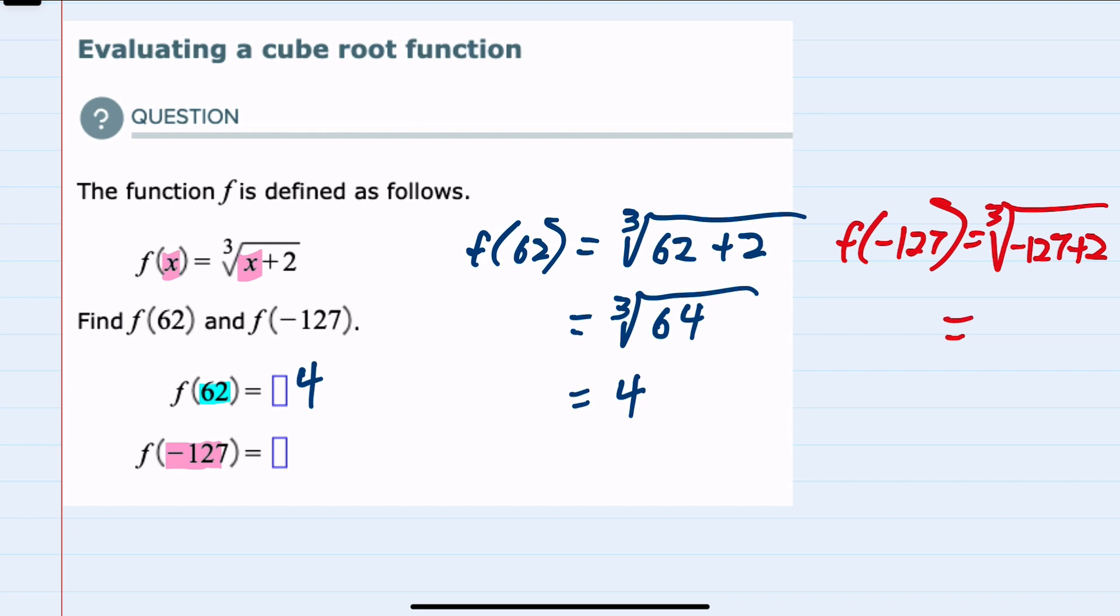Working under the radical first, negative 127 plus 2 - the signs are different, so we subtract to get 125, and keep the sign of the larger number, making it negative 125.